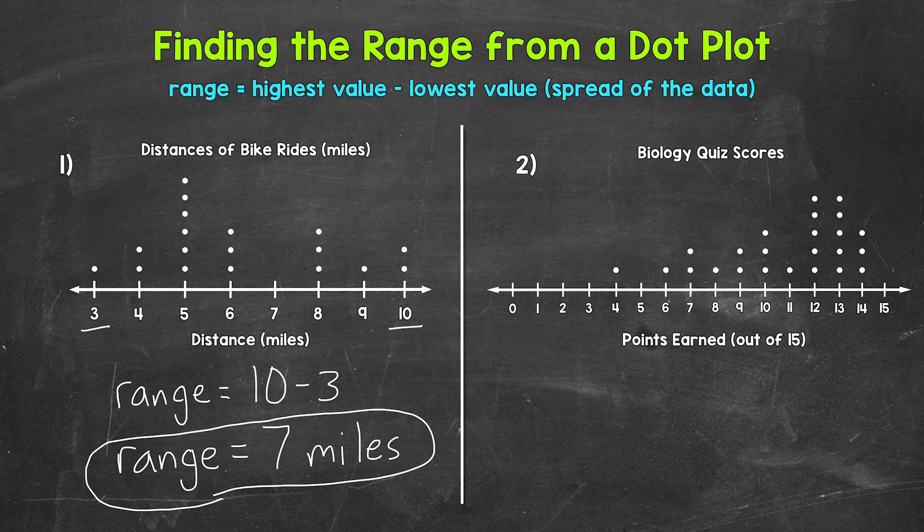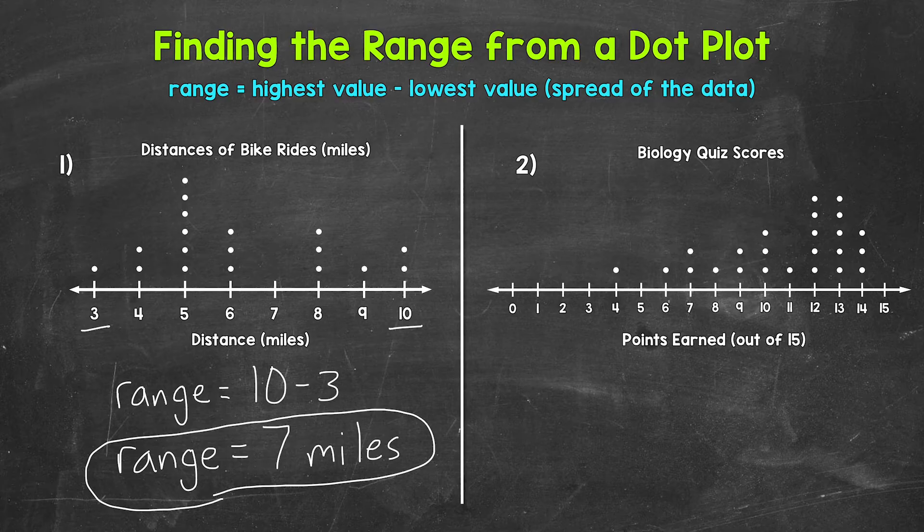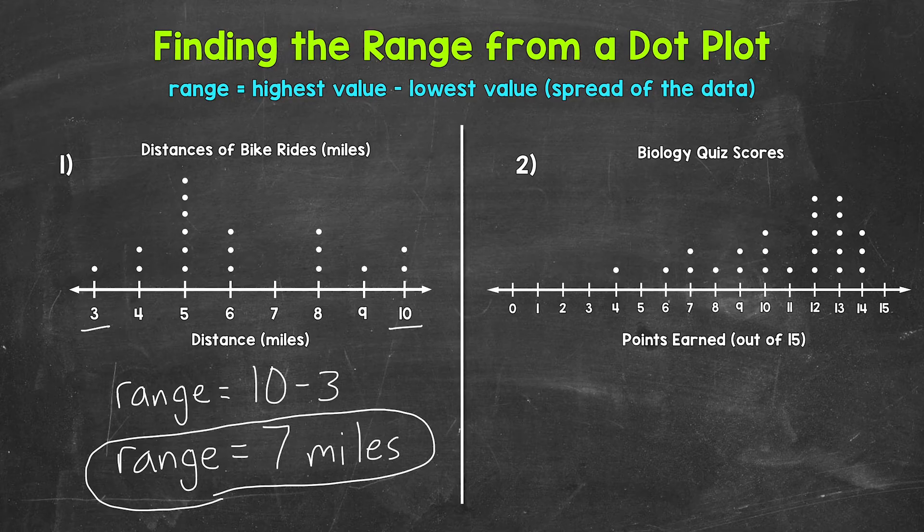Let's move on to number two, where we have a dot plot displaying a class's scores on a biology quiz. The quiz was out of 15 points. Now we need to be careful with dot plots like this. This dot plot has all potential scores listed on the number line. So zero to 15. Those are not the highest and lowest scores, though.